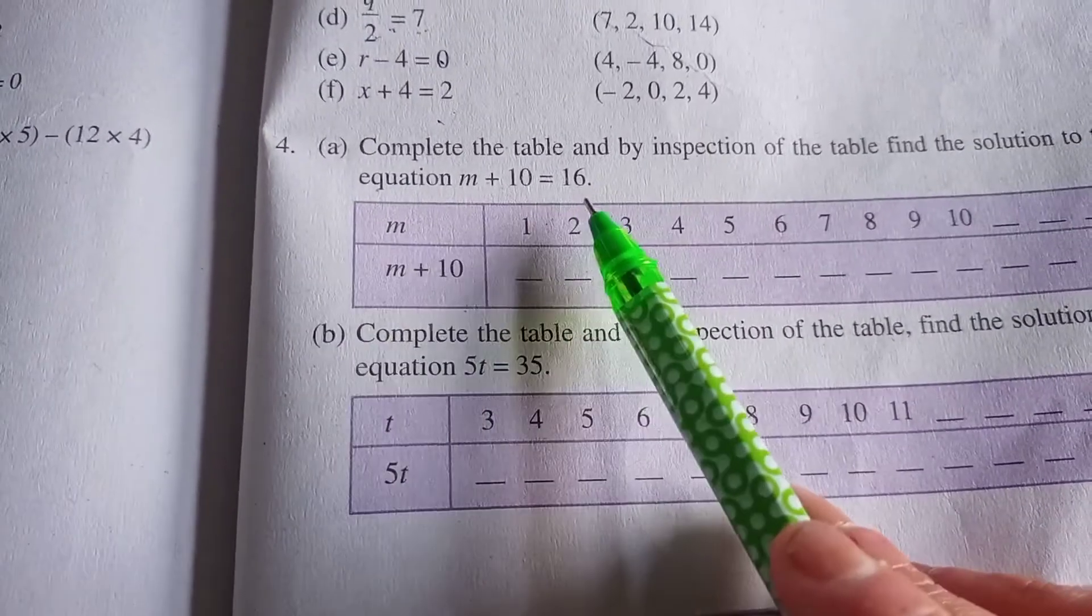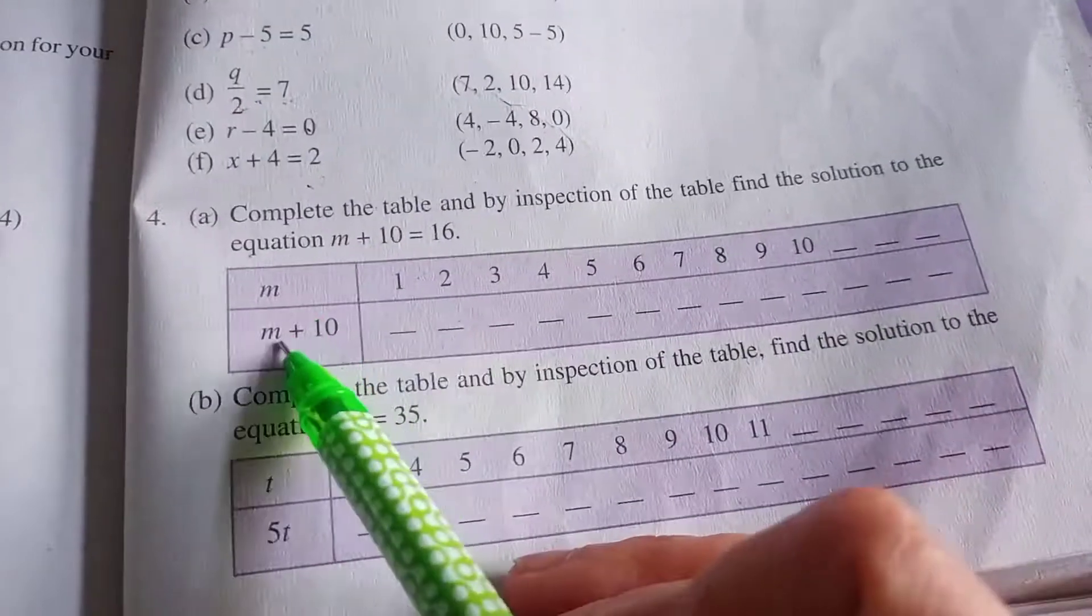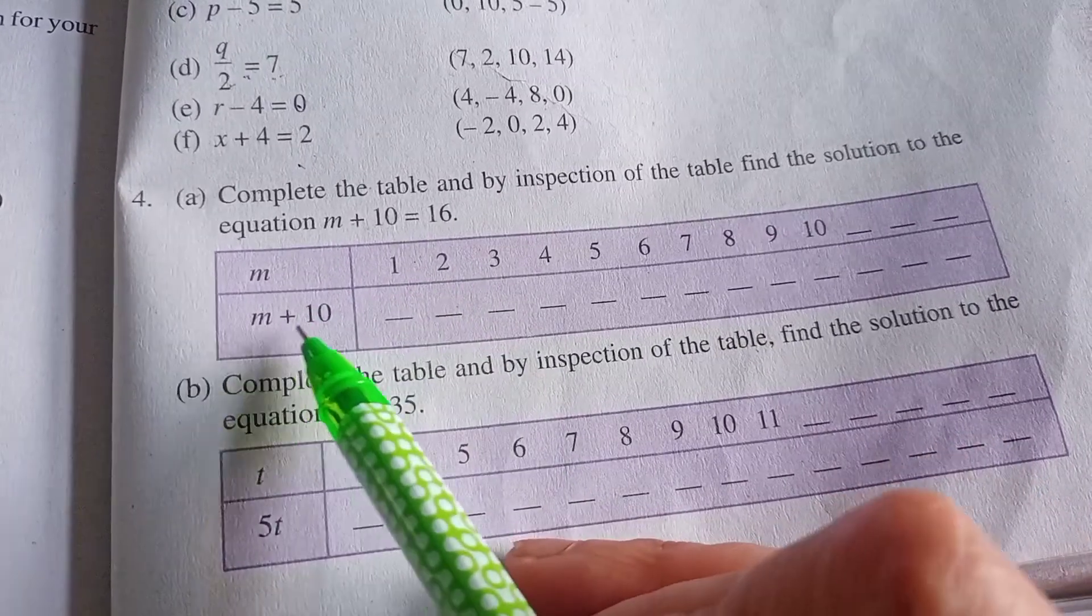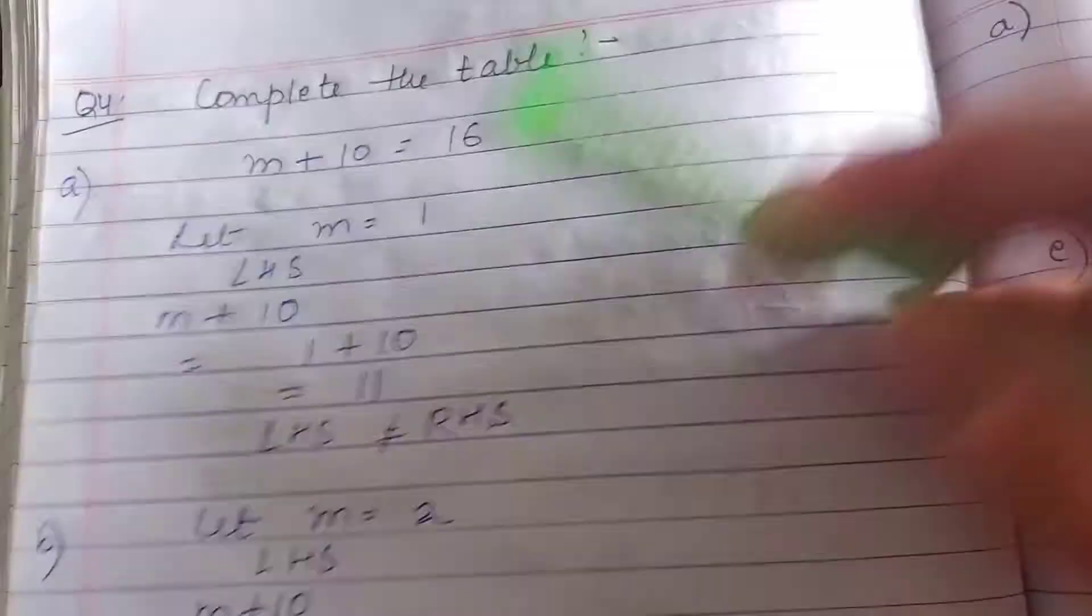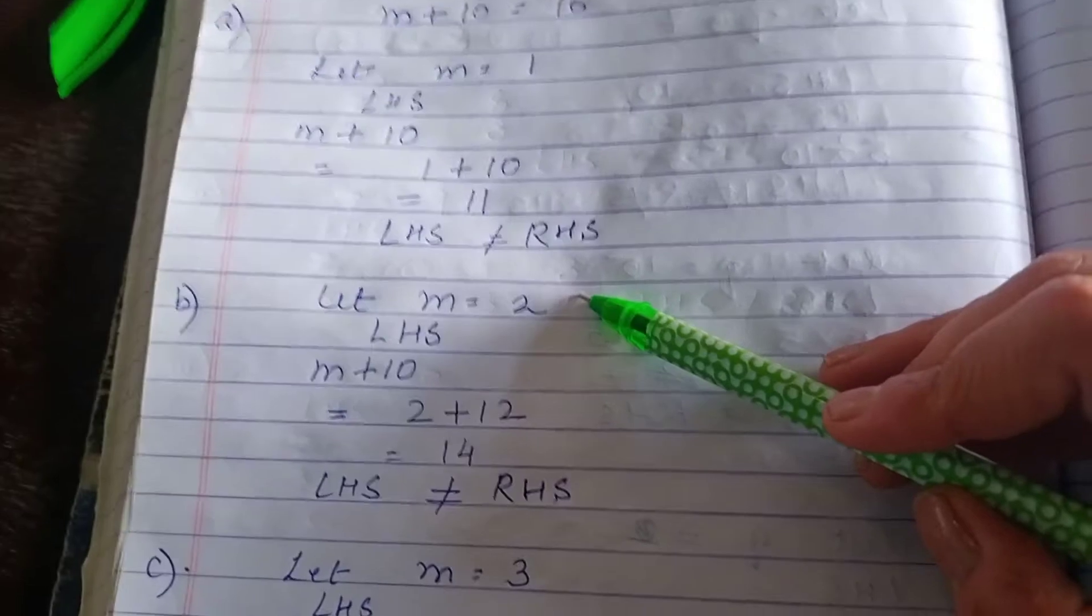First, we keep m equals 1. In place of m, I write 1. 1 plus 10 is 11. We don't want 11, we want 16. Second time, we keep m equals 2. 10 plus 2 is 12. Again, we are not getting the answer.